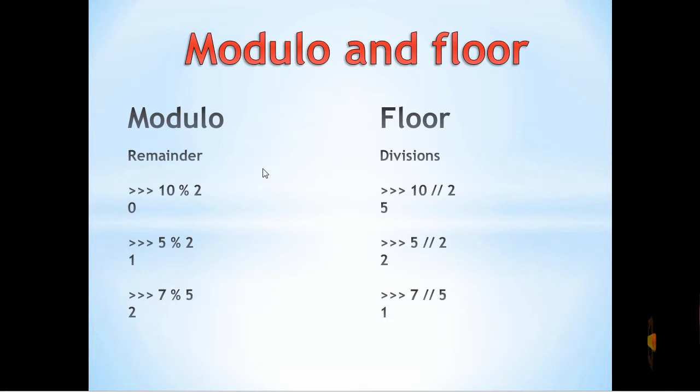Looking at the modulo operator, in the case of 10 modulo 2, 2 goes into 10 evenly so it gives you back 0. In the case of 5 modulo 2, 2 does not go into 5 evenly. 2 times 2 is 4 and 5 take 4 is 1, giving you back 1, the remainder. In the case of 7 modulo 5, it does not go evenly. 7 modulo 5 gives you back 2 because 7 take 5 is 2.